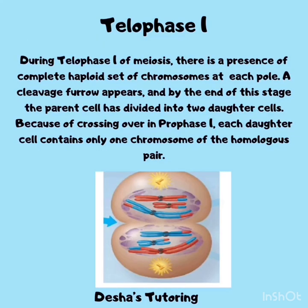During telophase 1 of meiosis, there is a presence of complete haploid sets of chromosomes at each pole. A cleavage furrow appears, and by the end of this stage, the parent cell is divided into two daughter cells. Because of crossing over in prophase 1, each daughter cell contains only one chromosome of the homologous pair.